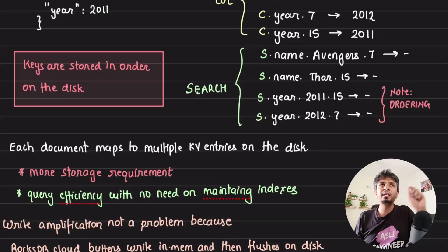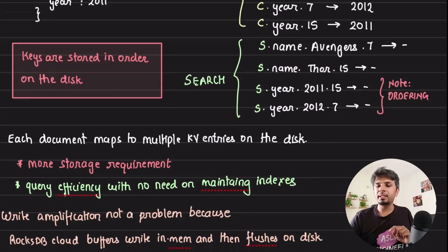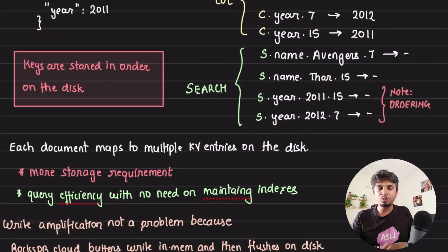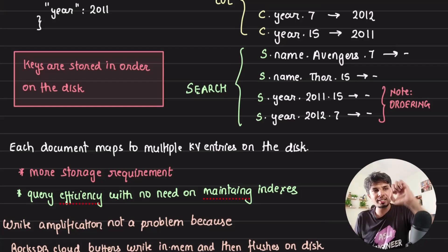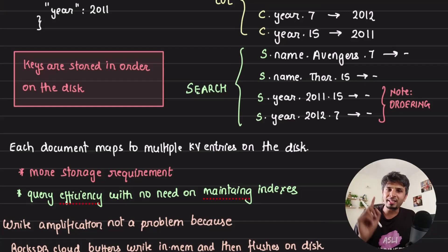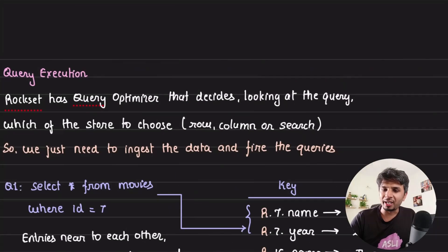But you would again think, Arpit, given when I'm inserting one document I saw six key-value pairs being created for the document that we spoke about. Isn't that too much? Isn't this write amplification? Yes, write amplification looks like a problem, but it is not. Why? Given that the database is based on top of RocksDB, so the writes that go to RocksDB are buffered in memory and then periodically flushed together on the disk as a contiguous SST file. That does not lead to write amplification because you are just flushing to disk once in one contiguous block of memory. That is why it is not a problem.